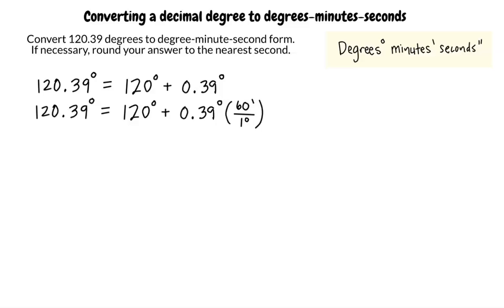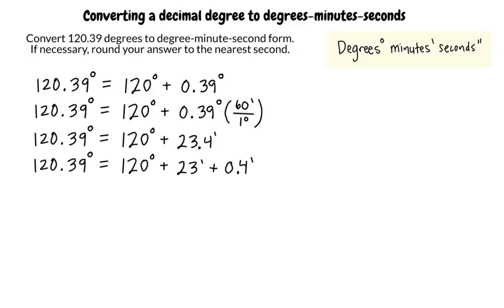Doing this, we get 23.4 minutes. Again, we can rewrite this decimal as the addition of the whole number and the decimal portion. So we write 120.39 degrees is equal to 120 degrees plus 23 minutes plus 0.4 minutes.